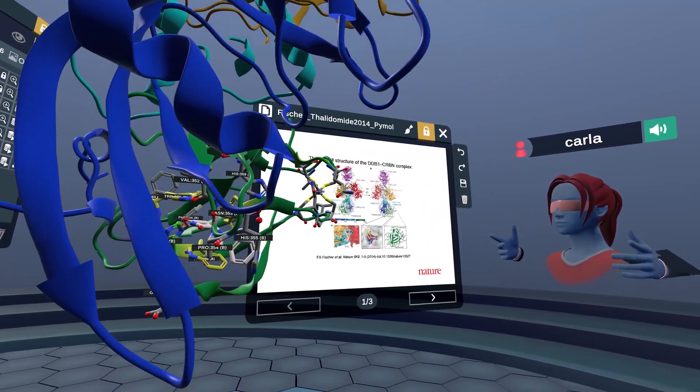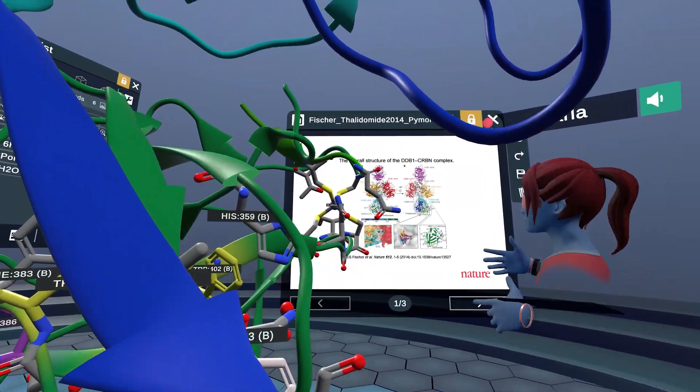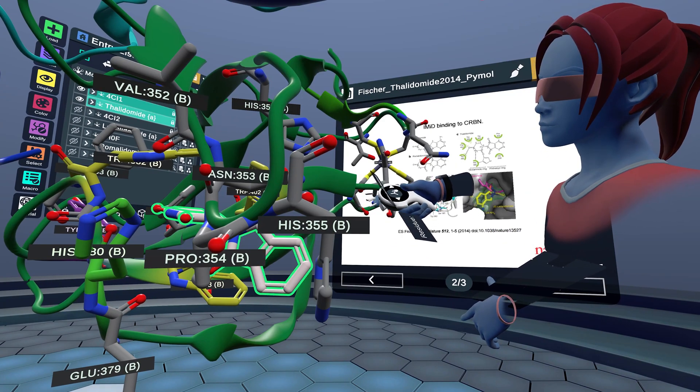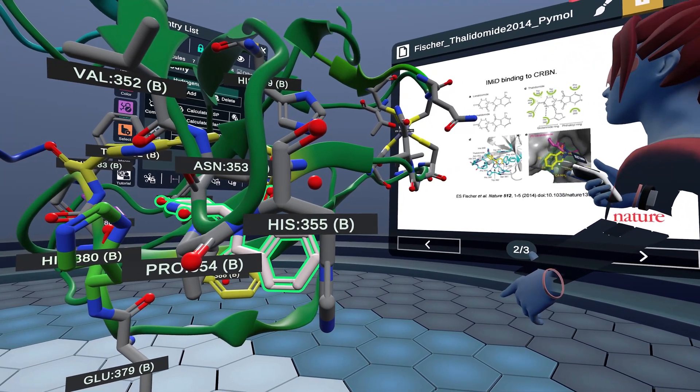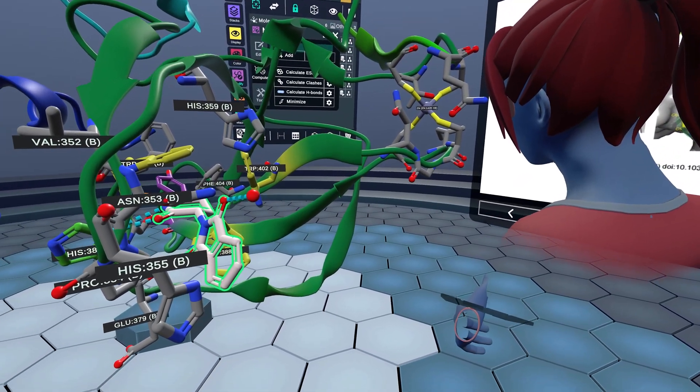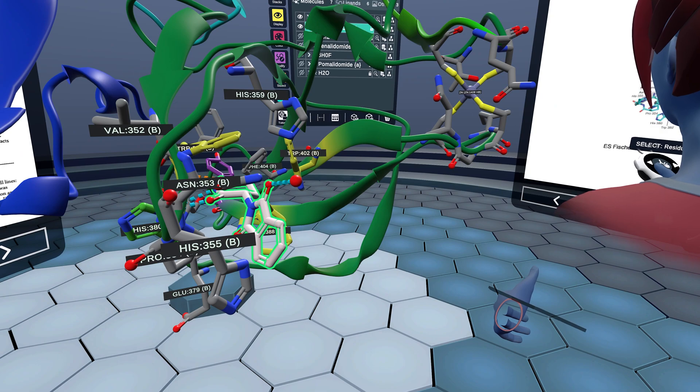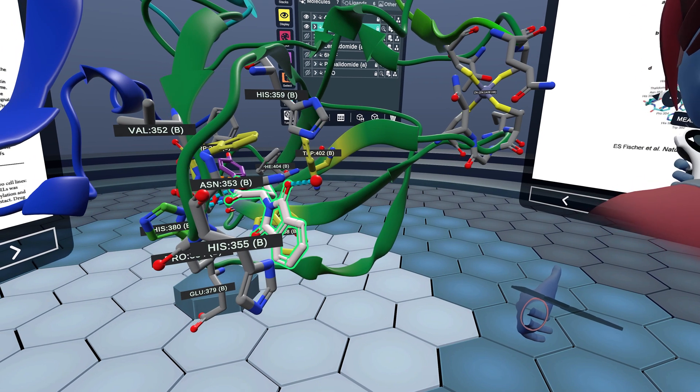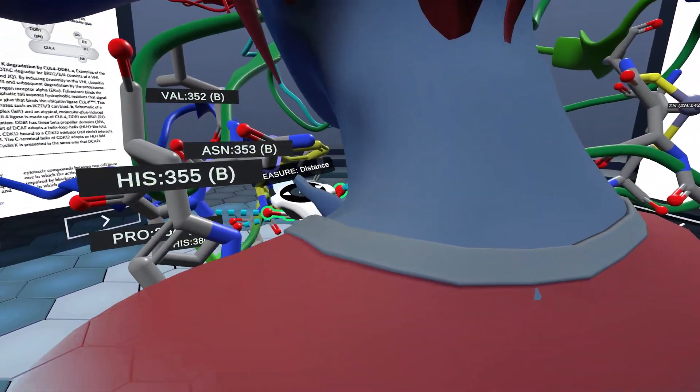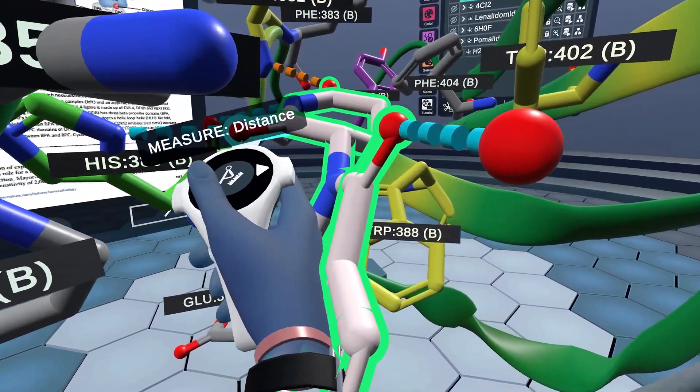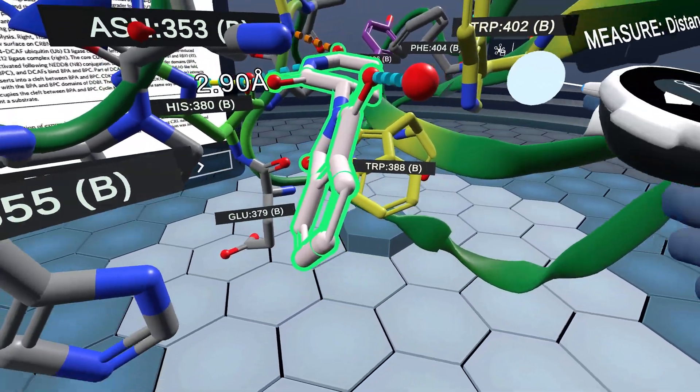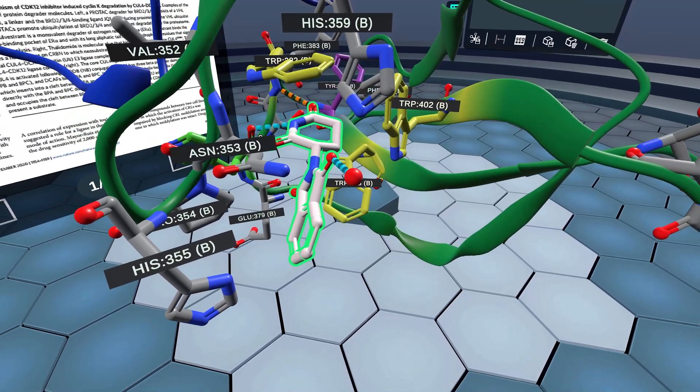Now we'll expand this binding site and take a look at the interactions more closely. First, I'm going to use Nanome's select tool to select the ligand, and then Nanome's modify tool to calculate the hydrogen bonds in the binding pocket. You can also use Nanome's measure tool to measure hydrogen bonds of interest, for example, between this carbonyl and histidine 380 at 2.9 angstroms, which looks like a pretty good hydrogen bond to me.